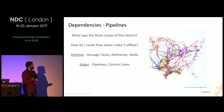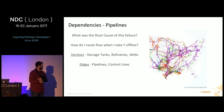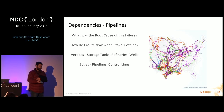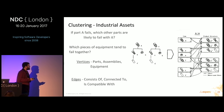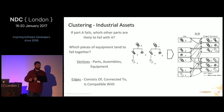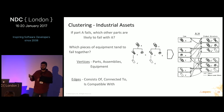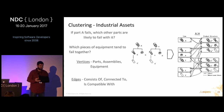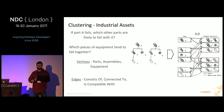Another dependency example is a pipeline: what is the root cause of a failure, how do I route flow from X to Y when Y goes offline? Vertices in a pipeline would be storage tanks, refineries, or wells; edges would be pipelines and control lines. Industrial assets: if part A fails, what other parts tend to fail with it? If you run a trucking fleet, you can do root cause analysis — maybe those trucks were all in the same place during a sandstorm.